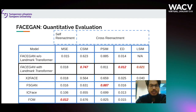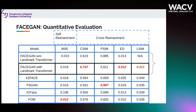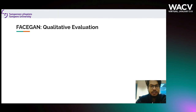Let's see quantitatively how well FaceGAN performs. The first two rows compare with and without the landmark transformer — with the landmark transformer, our model achieves better CSIM and ED scores. CSIM measures identity-preserving quality and ED measures expression transfer capability. Comparing against X2-Face, FSCAN, IC-Face, and FOM, FaceGAN with the landmark transformer achieves better CSIM, better ED, and better LSIM. LSIM measures the landmark similarity between the reenacted face and the source face, which we want to be very similar.